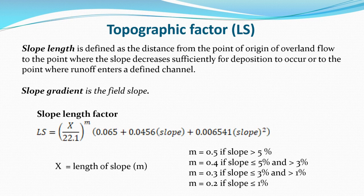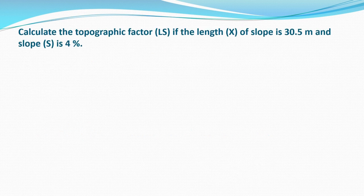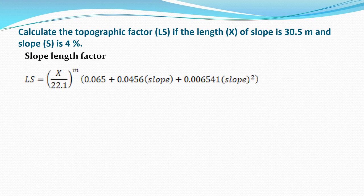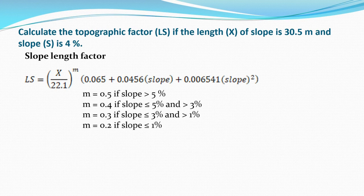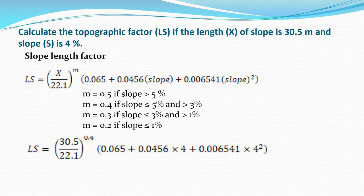Problem: Calculate the Topographic Factor LS if the slope length is 30.5 meters and the slope is 4 percent. Since the slope is 4 percent — less than or equal to 5 percent and greater than 3 percent — the value of m is 0.4. The Crop Management Factor C is the ratio of soil loss from cropland to the soil loss from a fallow land under identical conditions of soil, slope, and rainfall.